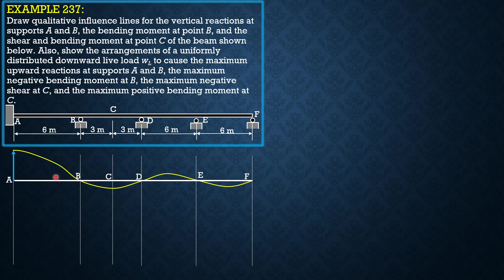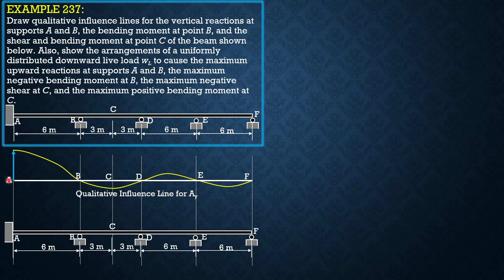Therefore, to maximize the positive vertical reaction at A, we load the portion of the qualitative influence line where it is above the horizontal line, or where it is positive, as shown in the figure. We load portion AB with live load, then next is DE. That would be the position or load arrangement of the live load to cause maximum positive reaction at A.